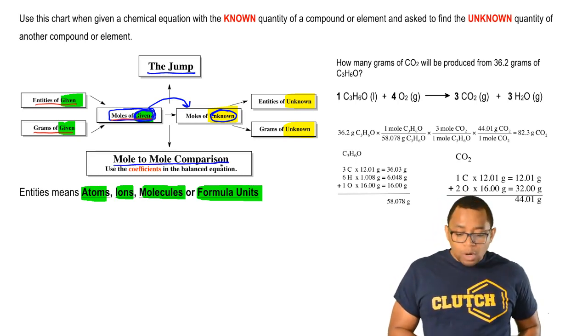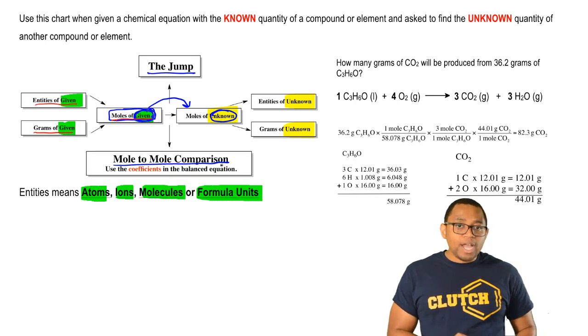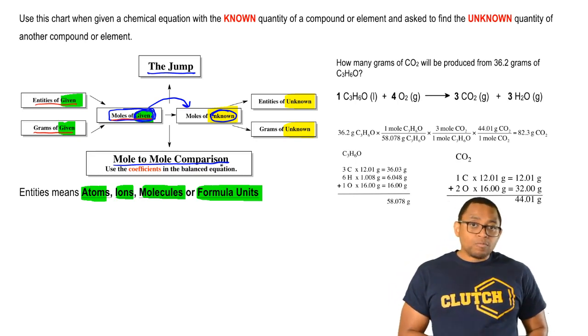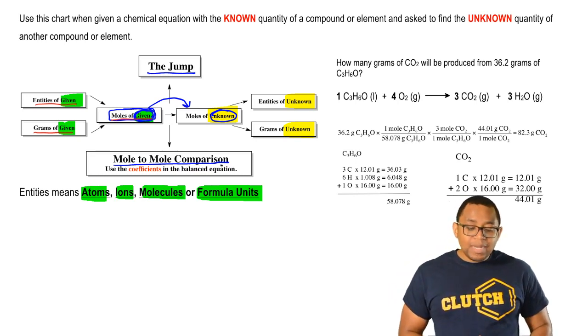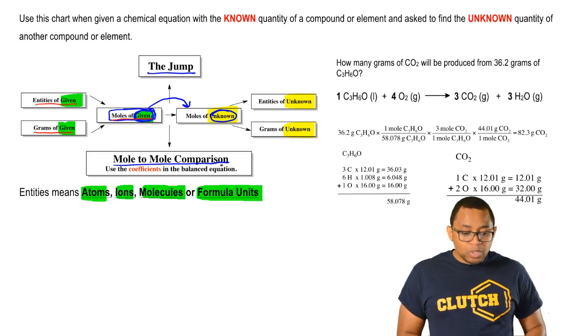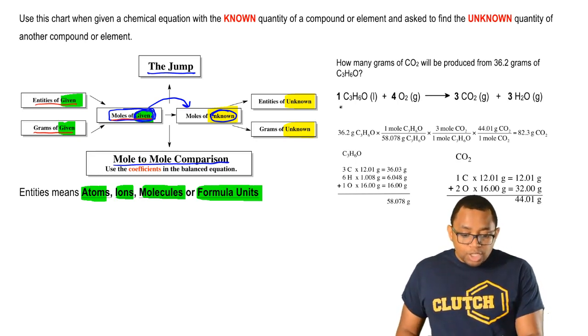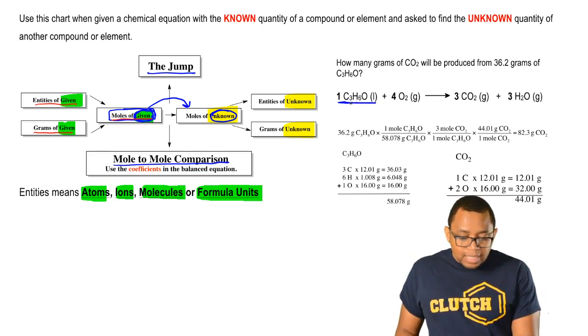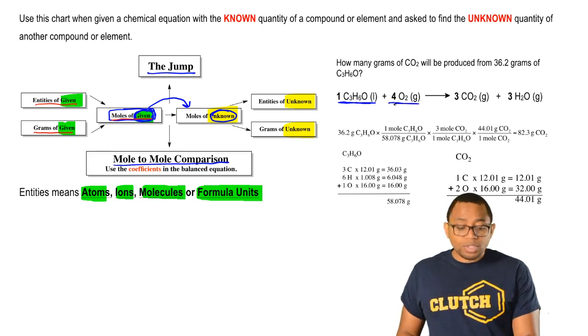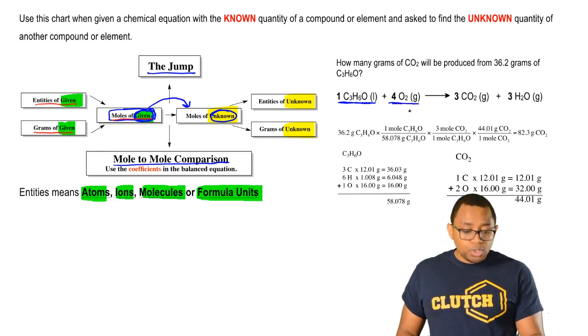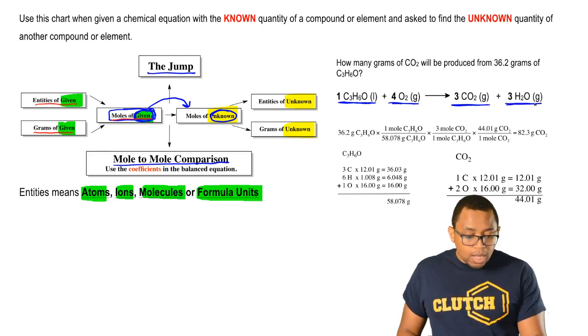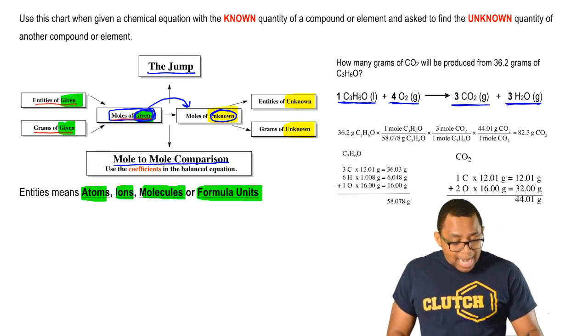For example, on the right side, we say how many grams of carbon dioxide will be produced from 36.2 grams of acetone, which is C3H6O. The balanced equation is one mole of acetone as a liquid reacts with four moles of oxygen gas to produce three moles of carbon dioxide gas and three moles of water vapor.